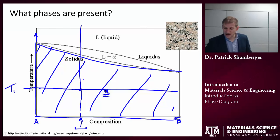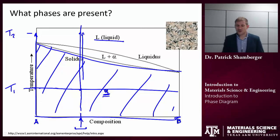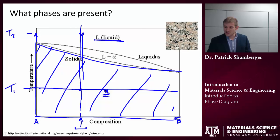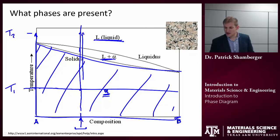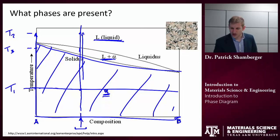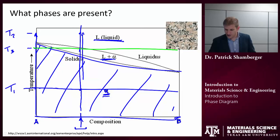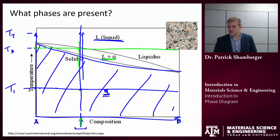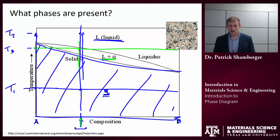If I heat it up enough to temperature T2, I'm in a different region — the liquid region. Again, there's only one phase present, and that phase is liquid, so the whole system has melted. What about an intermediate temperature T3 at this composition? This is a two-phase region. I come up, find the intersection, and it falls in this two-phase region. So there are both liquid and solid present under those conditions.